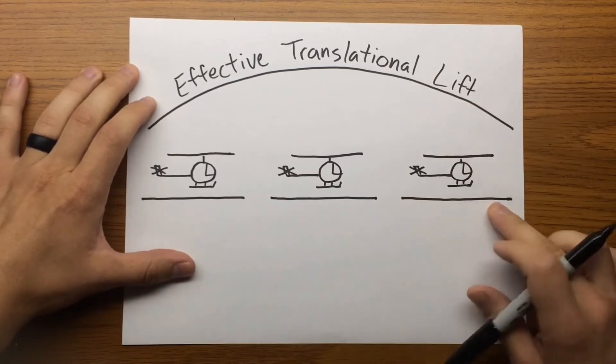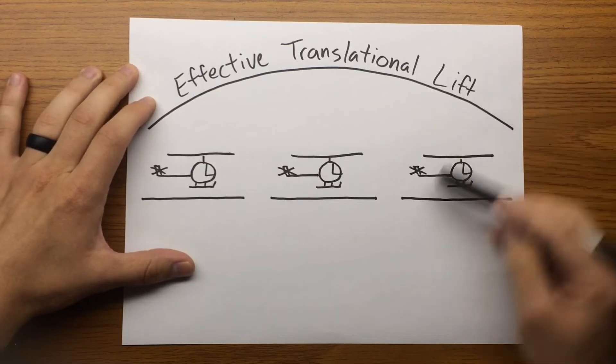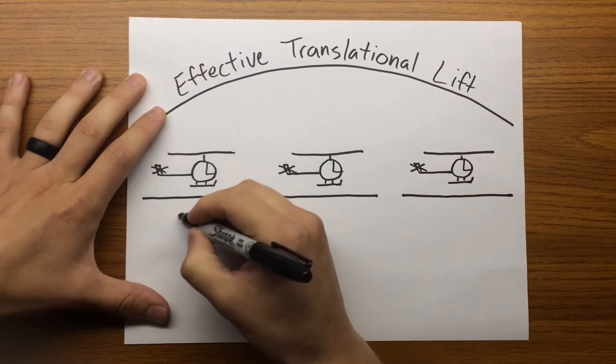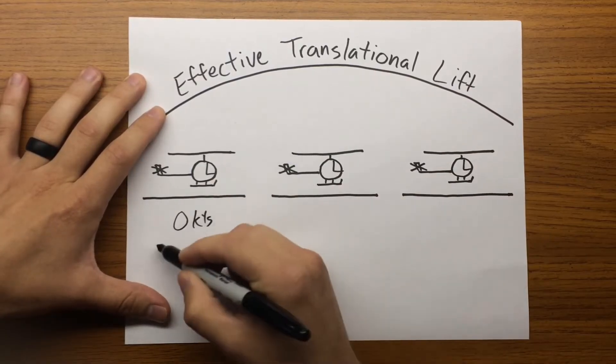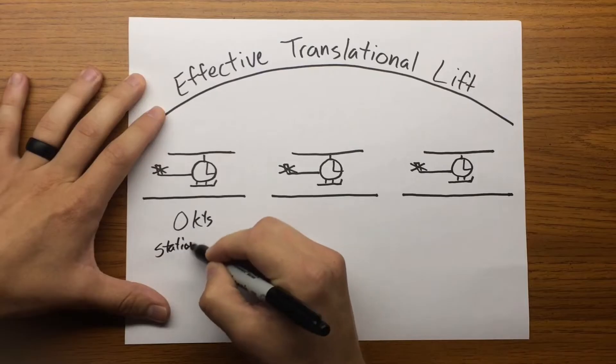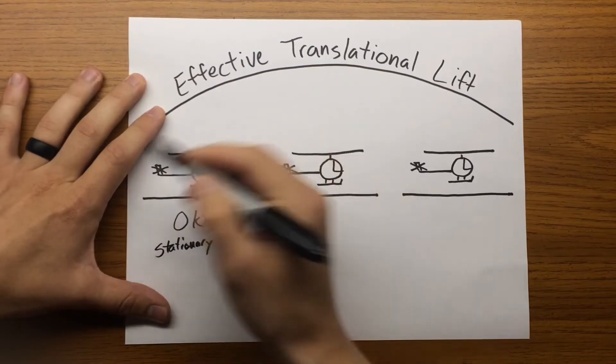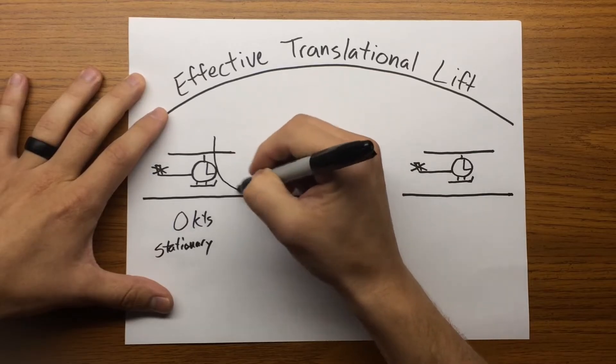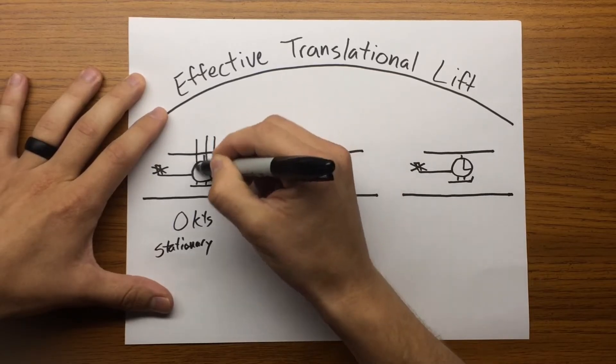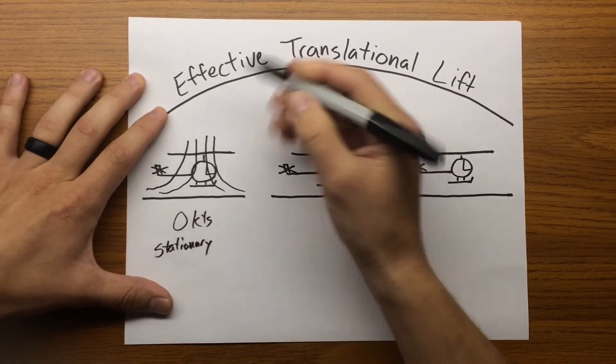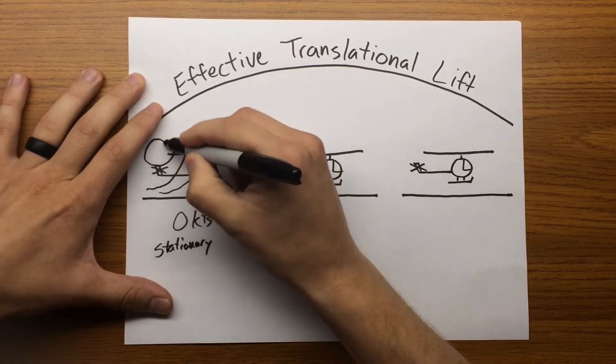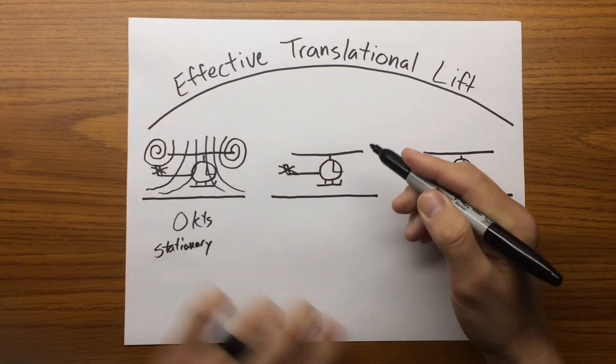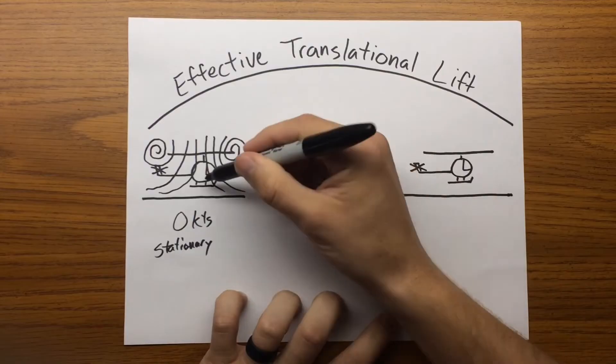I've got three diagrams here drawn out, and this is going to show the progression from a stationary hover all the way up to effective translational lift. So, stationary hover, looking at zero knots, truly stationary, no air velocity. We talked about this in our airflow at a hover video, where this airflow is coming in through the rotor system vertically and starting to get pushed away from the rotor system. And also, we're going to have these wingtip vortices on the tips of the rotor blades.